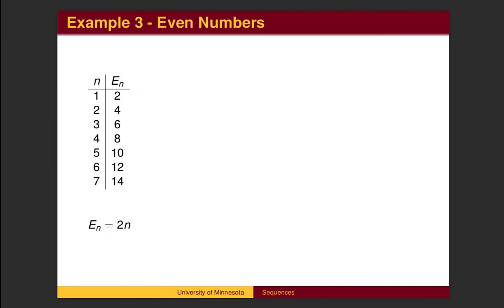Some sequences have easy formulas. For example, here is the sequence of positive even numbers. It is easy to see that the value is twice the term's position. This is one way of defining a sequence, with an explicit formula. A term in the sequence can be found directly by plugging in a value for n. For example, the 20th even number is 40.